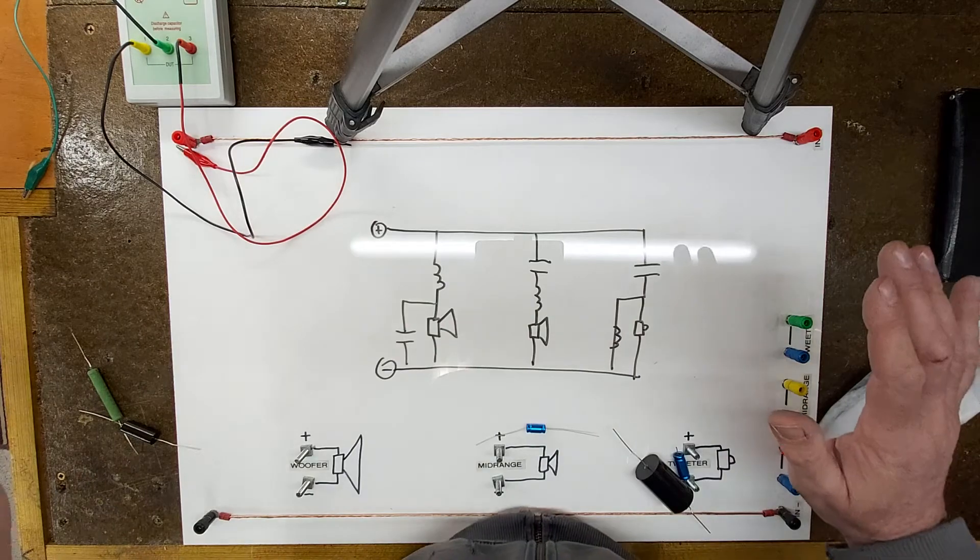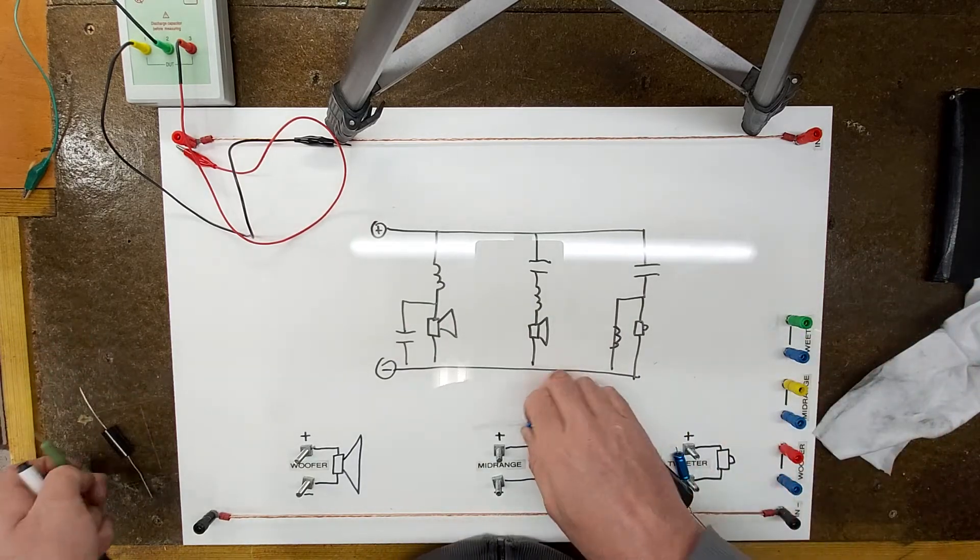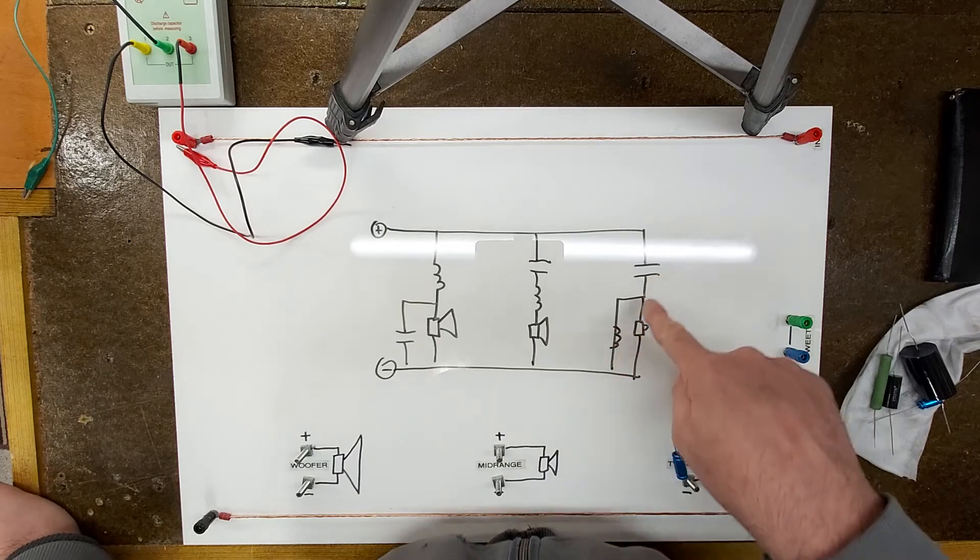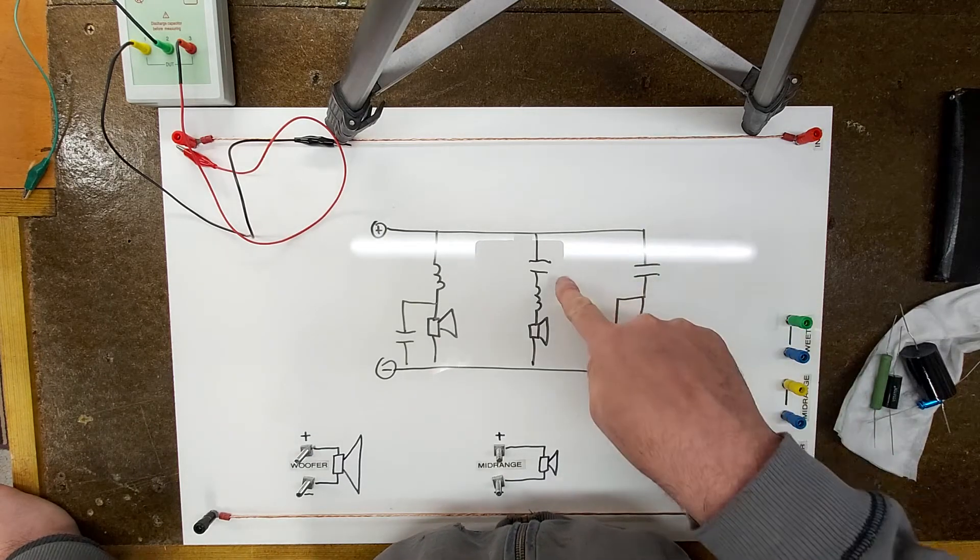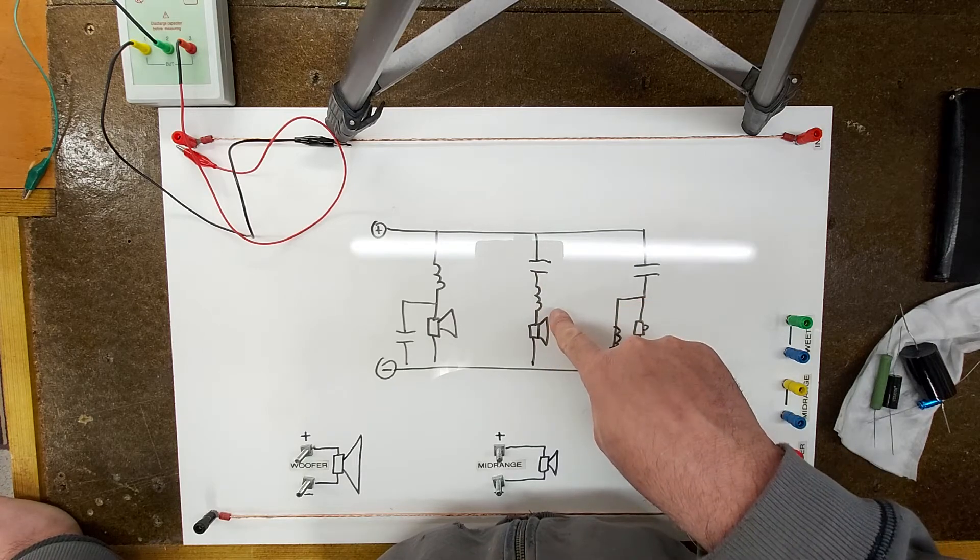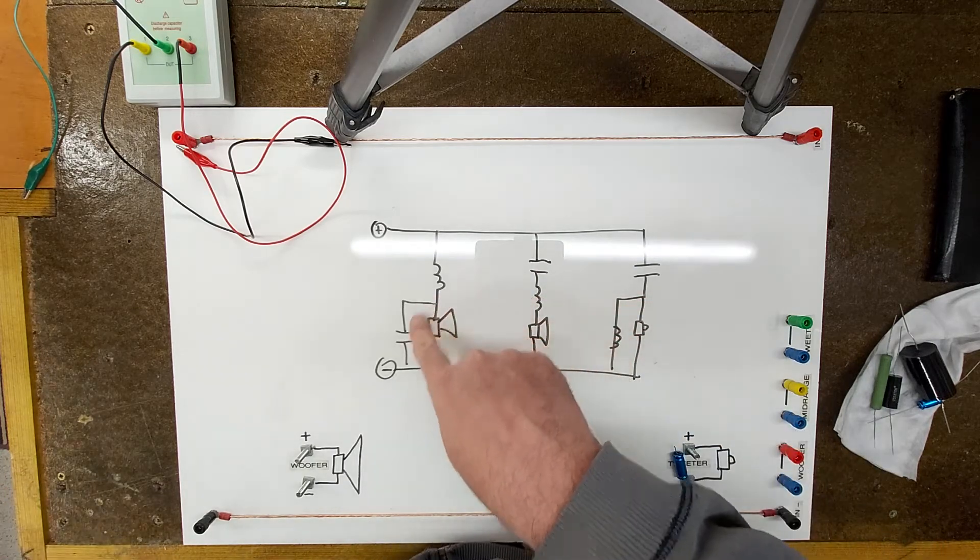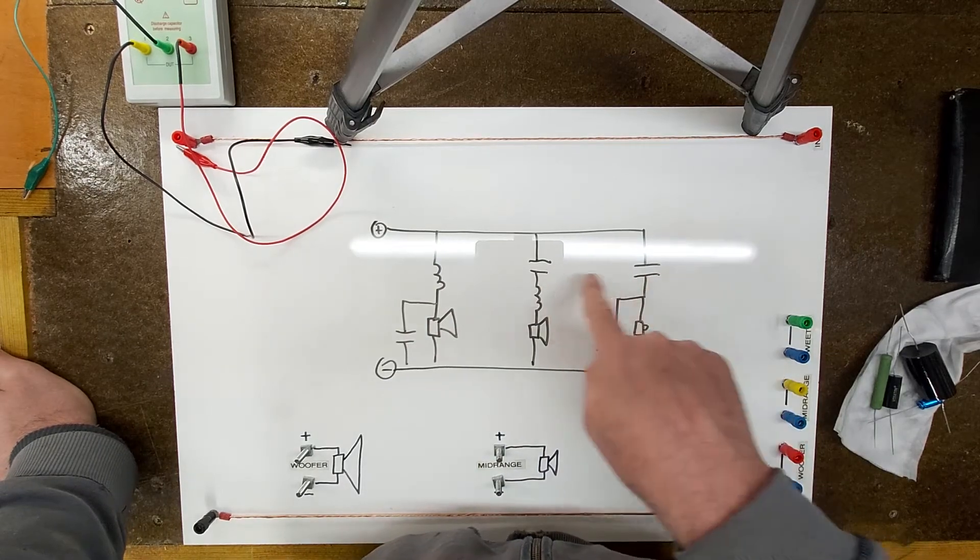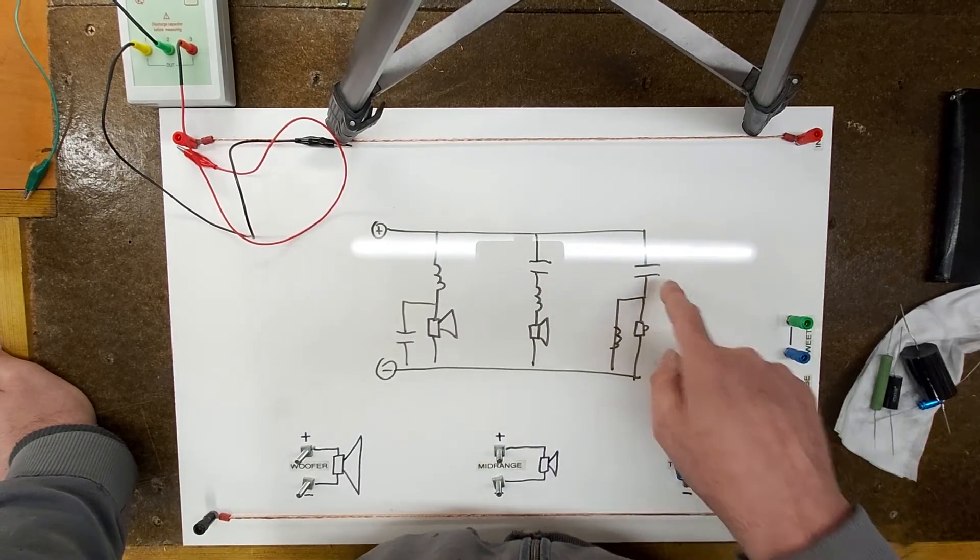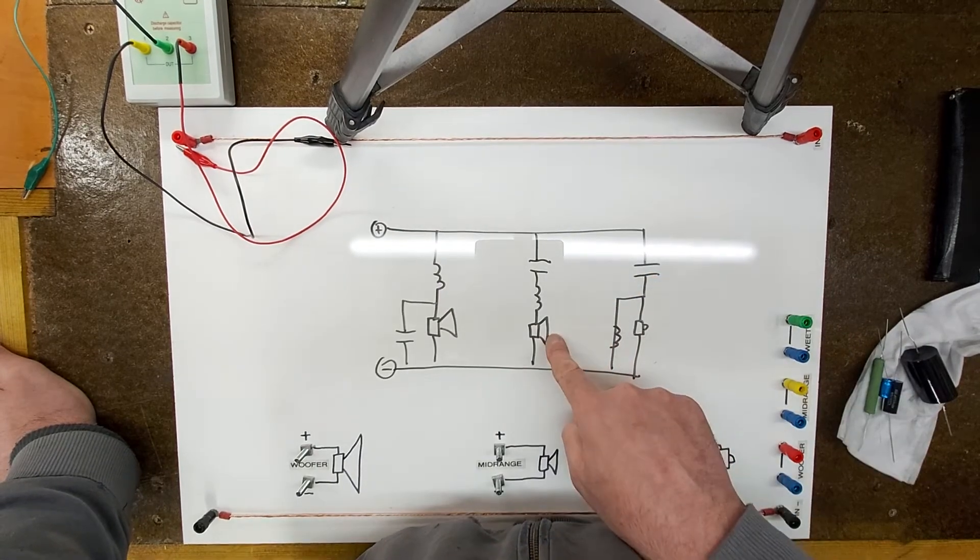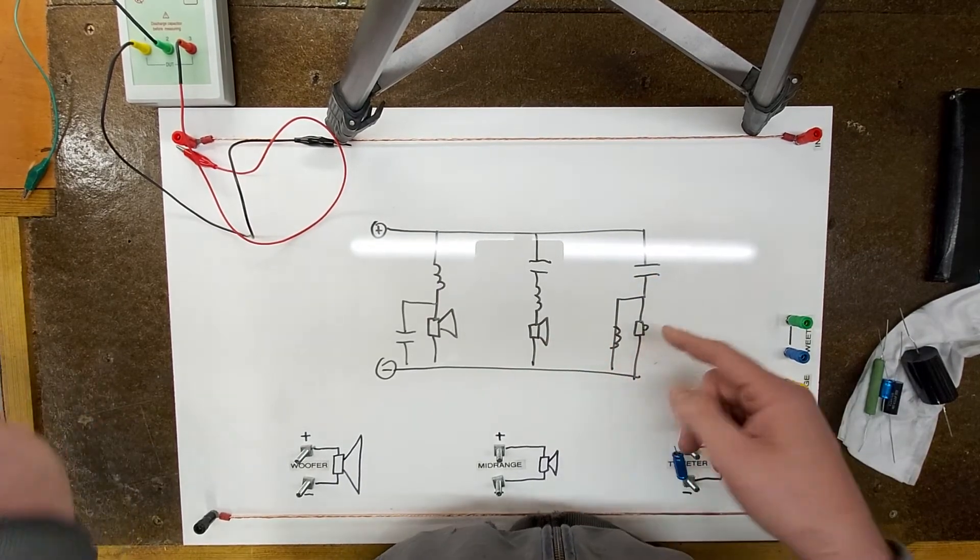Right, so here I've drawn a very simple three-way speaker crossover. We have a second order for our tweeter, a bandpass first order for our mid-range, and a second order for our woofer. Now if we were to replace these capacitors with polypropylene when before they were electrolytic, chances are the mid-range and the tweeter are now going to play louder.